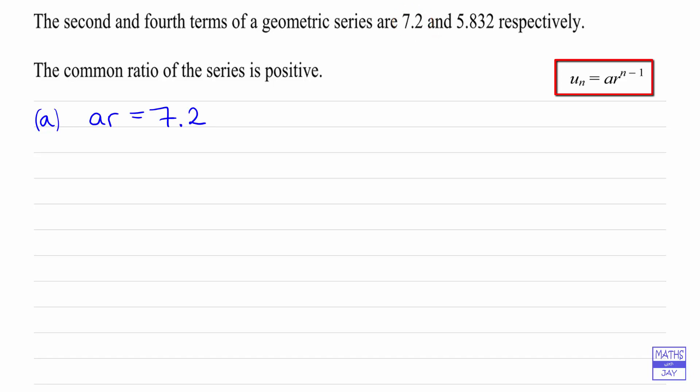Similarly, we've got the fourth term, so we've got n is 4. There we've got a times r to the power of 3 and that's equal to 5.832.